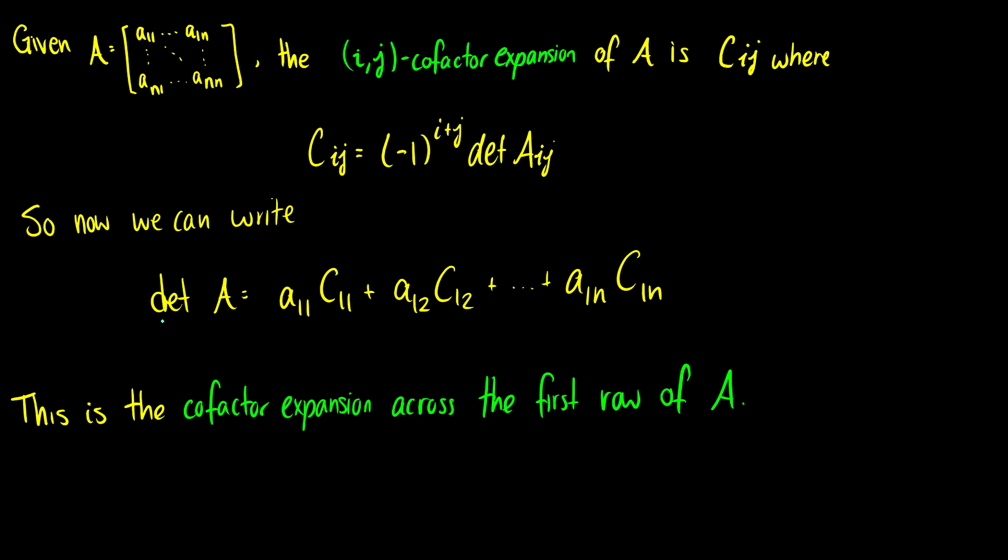Now we're able to write the determinant of A as A11C11 plus A12C12 plus all the way up to A1NC1N. So no longer do we have to write the determinant of A11 and then subtract and add and subtract every other term. Using C11 we can just plug our row and column into the formula to figure out if we have to add or subtract.